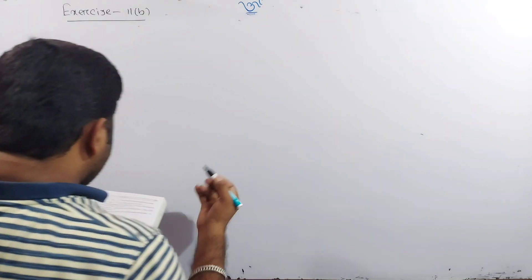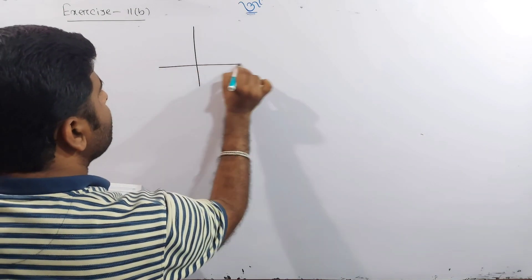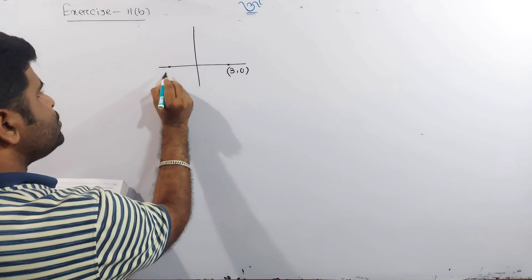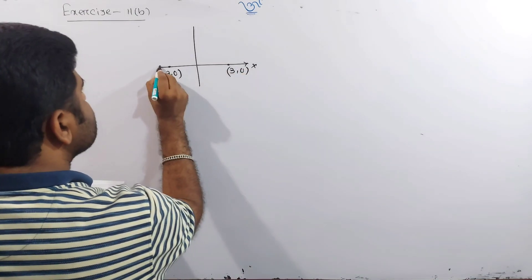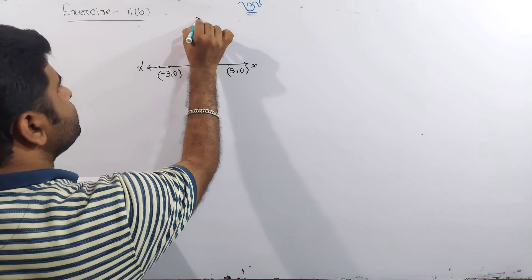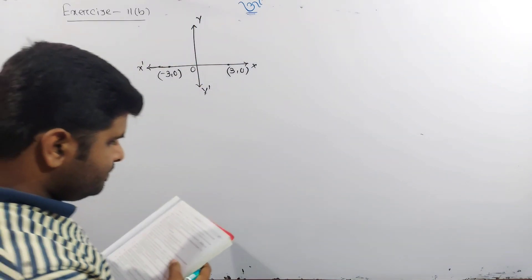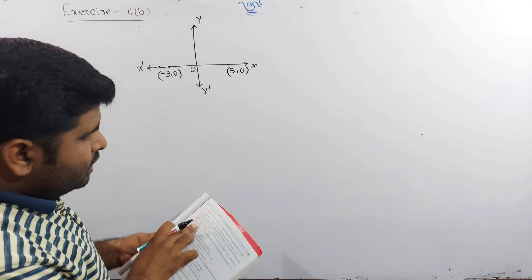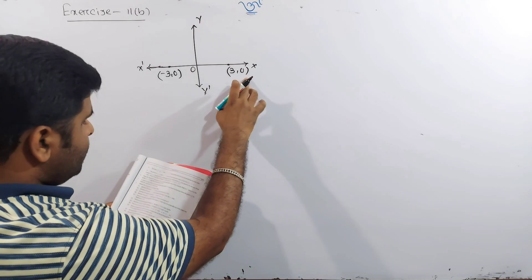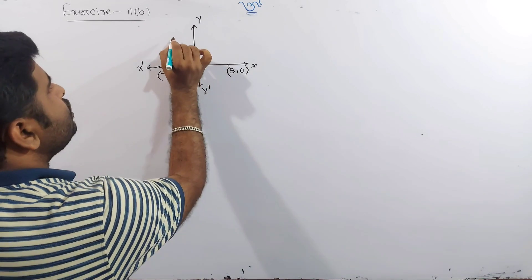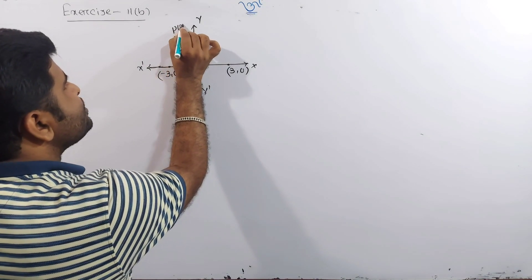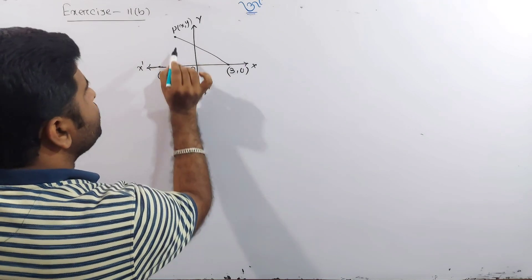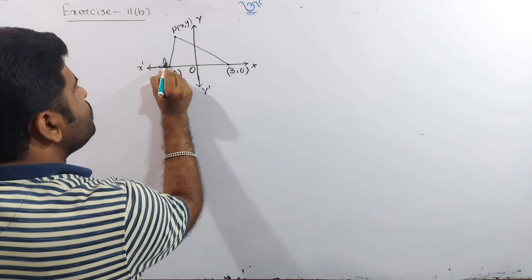Let's go. First the graphical idea. Point A is (3, 0) and point B is (−3, 0). P is at (x, y). Its distance from (3, 0) is twice its distance from (−3, 0).